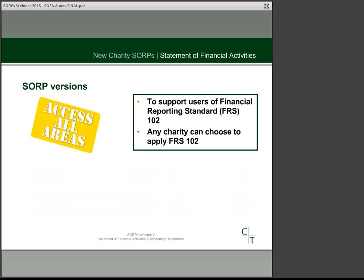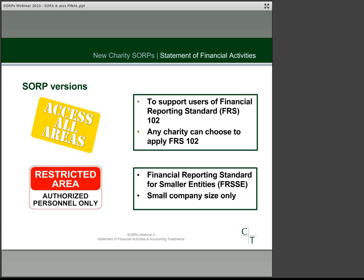There are two different versions of the charity SORP. All charities may apply the FRS 102 SORP, and if your charity's figures exceed the small company limits in the Companies Act you must apply this version. The current thresholds for a small company are income of £6.5 million, gross assets of £3.26 million, and 50 employees. If you're under two out of these three you're generally deemed to be small, and where you are small you may alternatively report under the Financial Reporting Standard for Smaller Entities, or FRSSE, version of the charity SORP. You cannot pick and choose between the two versions and must apply all the relevant requirements of the one that you use.